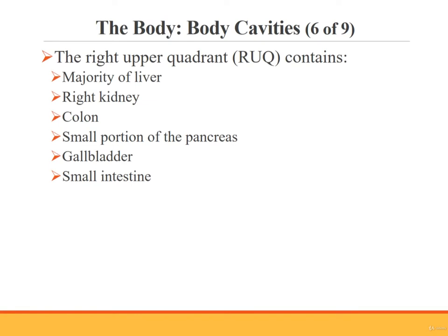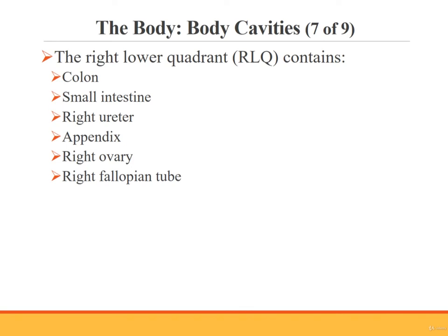The right upper quadrant (RUQ) contains the majority of the liver, the right kidney, the colon, a small portion of the pancreas, the gallbladder, and the small intestine. The right lower quadrant (RLQ) contains the colon, the small intestine, the right ureter, and the appendix. In females, the RLQ also contains the right ovary and the right fallopian tube.